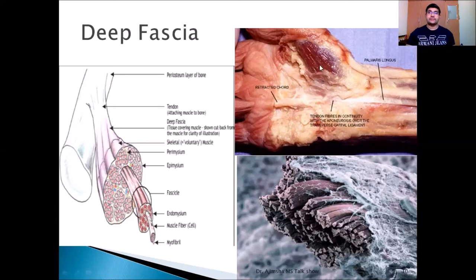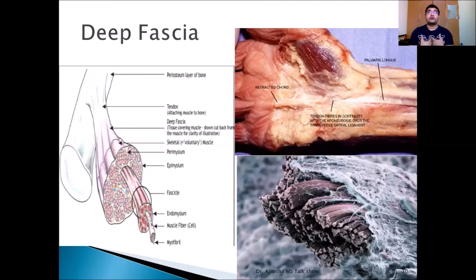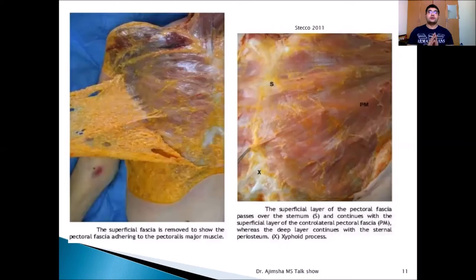Deep fascia shows aponeurotic features and is very resistant to traction — you can see the aponeurotic expansions here. It presents different thickness according to the evaluated zones; where it is needed to be more, it is thicker. A recent cadaver study by Valke found that fascia is thicker in the abdomen and lower extremities in younger populations, while it is thicker in the back — especially the thoracolumbar region — in older populations.